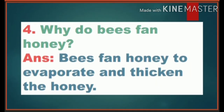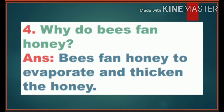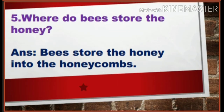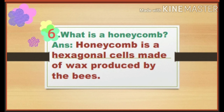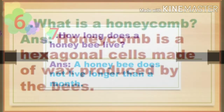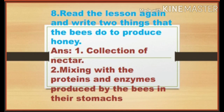Fourth question: Why do bees fan honey? Bees fan honey to evaporate and thicken it. Fifth: Where do bees store the honey? Bees store the honey into the honeycombs. Sixth: What is a honeycomb? A honeycomb is a hexagonal cell made of wax produced by the bees. Seventh: How long does a honey bee live? A honey bee does not live longer than a month. Eighth: Write two things that bees do to produce honey — collection of nectar, and mixing with proteins and enzymes in their stomach.